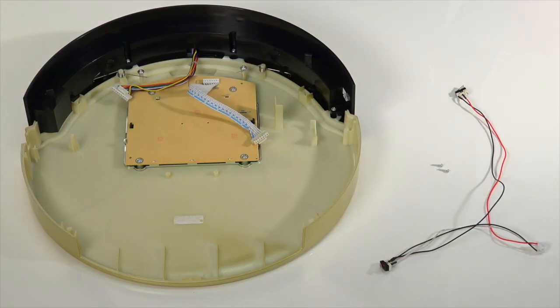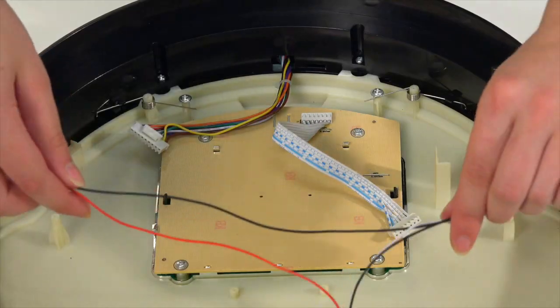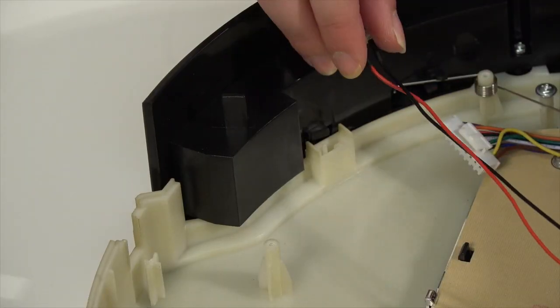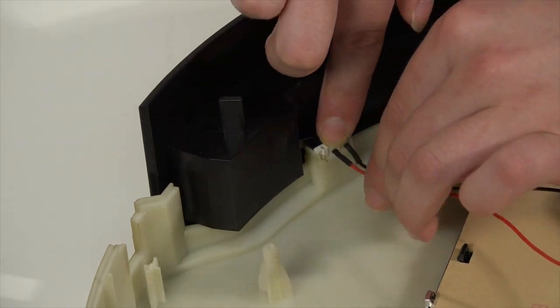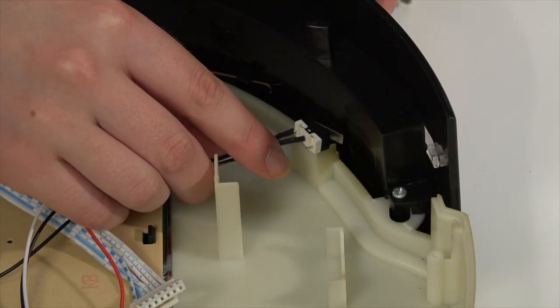Next, place the new sensors in the open spaces. Make sure to place the red wired sensor on the left side of the cover. The black wired sensor goes on the right side.